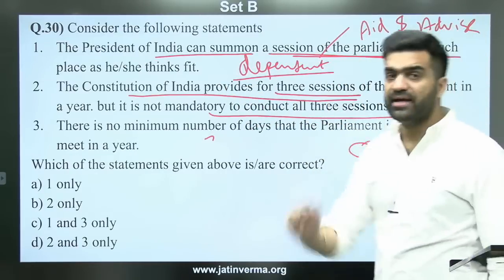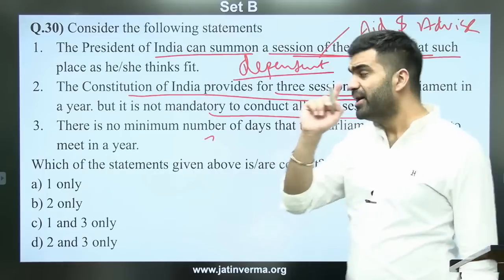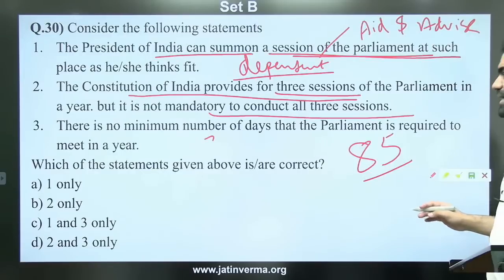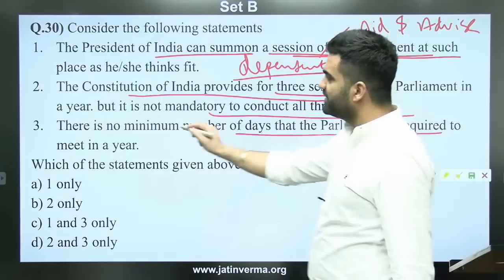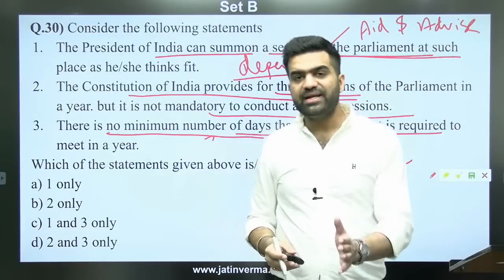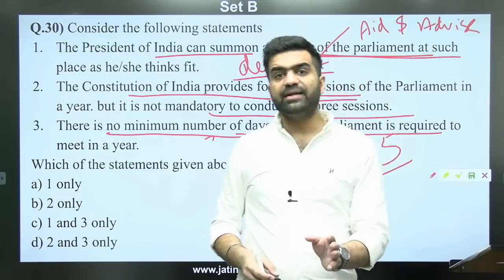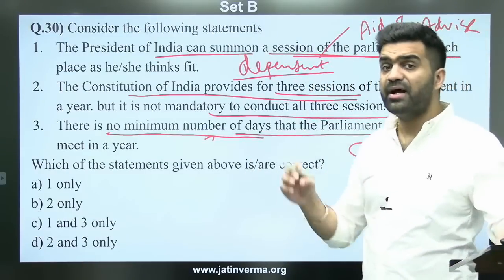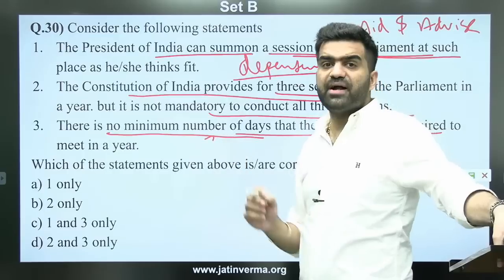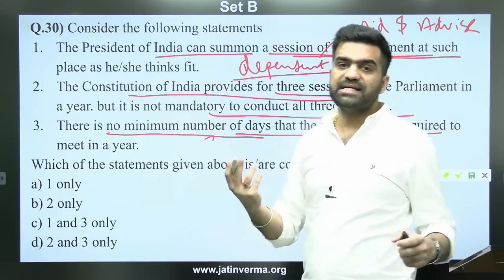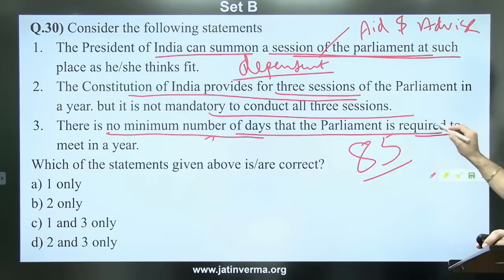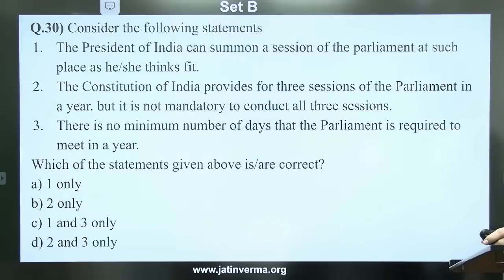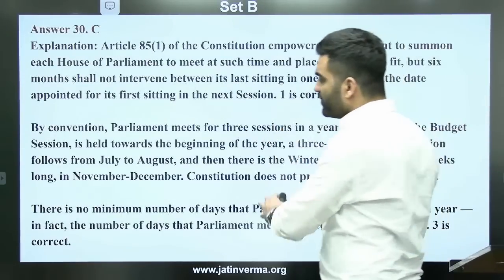The Constitution does not specify three sessions — this is written in the Rules of Lok Sabha and Rajya Sabha, not in the Constitution itself. There is no minimum number of sitting days mandated. Parliament is the biggest temple of Indian democracy, yet there is no fixed calendar for when sessions will be held. The answer to question 30 is C.